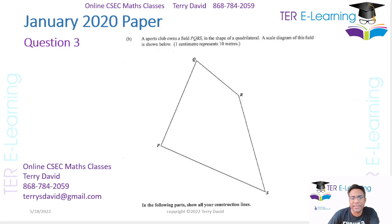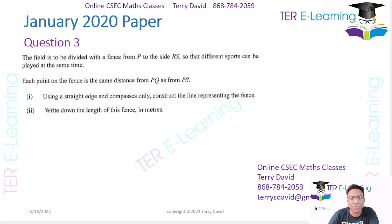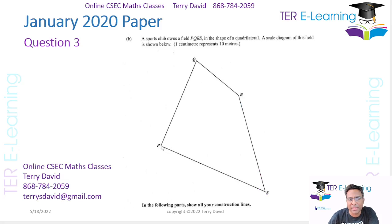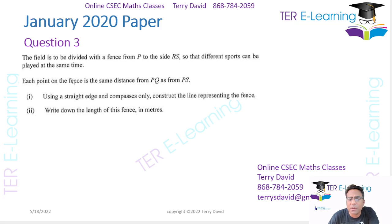The next part of the question says: a sports club owns a field PQRS in the shape of a quadrilateral. A scale diagram of this field is shown below, where 1 cm represents 10 meters. The field is divided with a fence from P to the side RS, so that different sports can be played at the same time. Each point on the fence is the same distance from PQ as from PS.